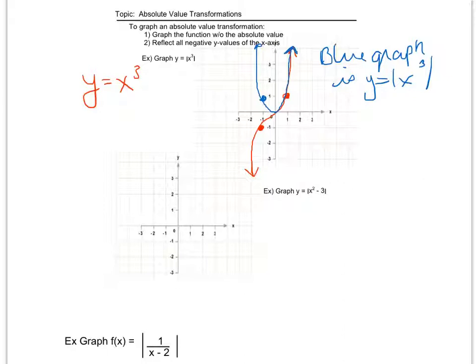So then on the second one, I'm supposed to graph y equals x squared minus 3. So I'm going to do it the same way. I'll start in red and just graph y equals x squared minus 3 without the absolute value bars. I know this is a parabola that's been shifted down 3. So I'm going to go ahead and fill in some points that I know just to make my graph a little bit nicer. So here would be my function without the absolute value bars.